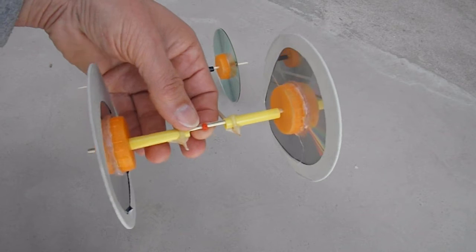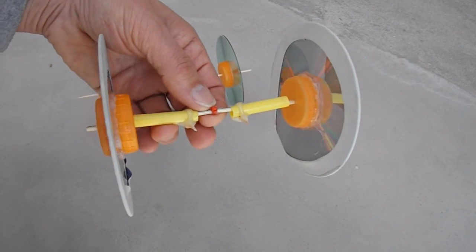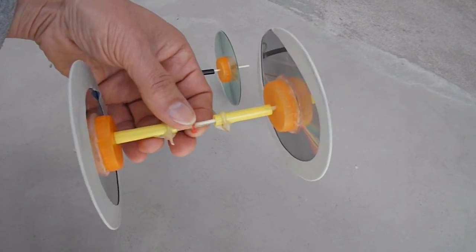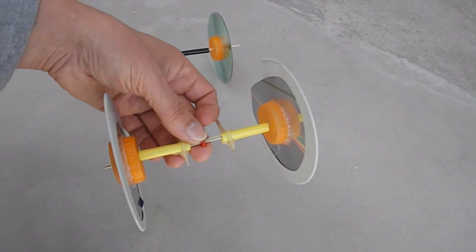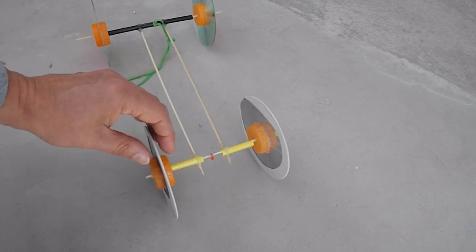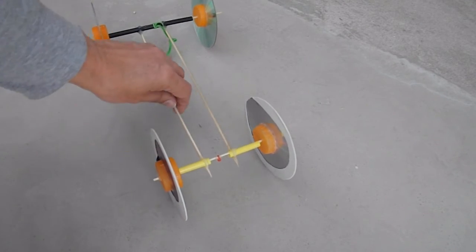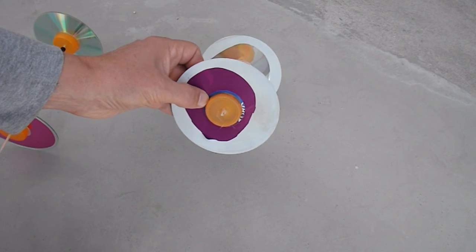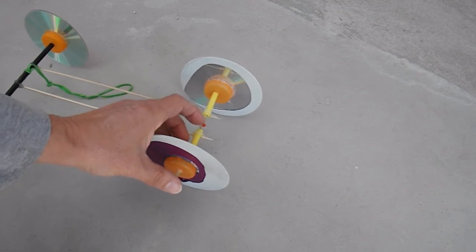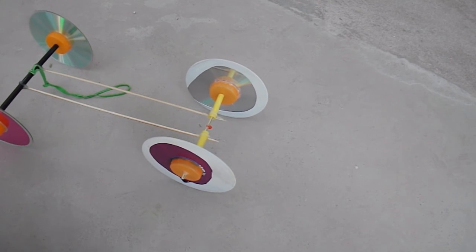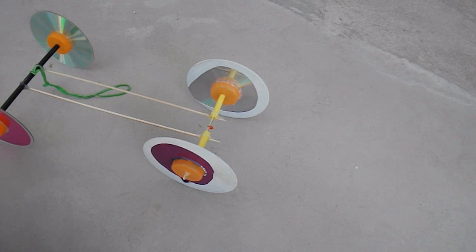On there I've got a little cable tie just to give us something to hook the rubber band onto. The wheels are CDs or DVDs with plastic bottle tops hot glued across the middle to grip the axle. And I think that's it.